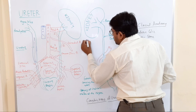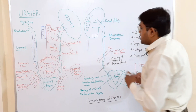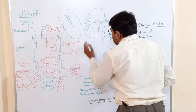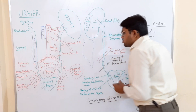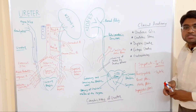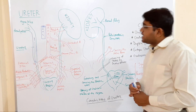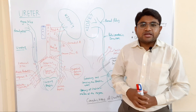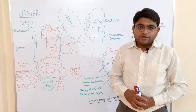Ureteroceles: the ureters are normally narrow tubules, but sometimes they may dilate, forming a cystic dilatation known as a ureterocele. This completes the discussion on the clinical anatomy of the ureter. Thank you very much.